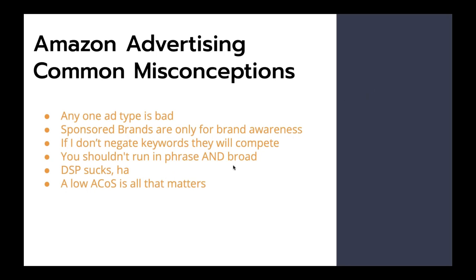Another misconception is you shouldn't run in phrase and broad. I hear this often — that if you're running phrase and broad, it defeats the purpose, they're almost the same. Or if you're running auto, you should only move it to exact. This is a huge misconception if you're running things at scale, because you need to run all three match types. They all have different purposes, and you can have the exact same keyword in three different campaigns with three different match types for one ASIN and they're not going to compete — there are way too many placements on the page for that.